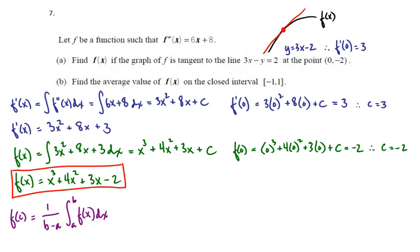It's the integral divided by the interval, so in this case the interval is from -1 to 1. We have 1 over 1 minus (-1), which is 1 over 2, times the integral from -1 to 1 of x cubed plus 4x squared plus 3x minus 2 dx.